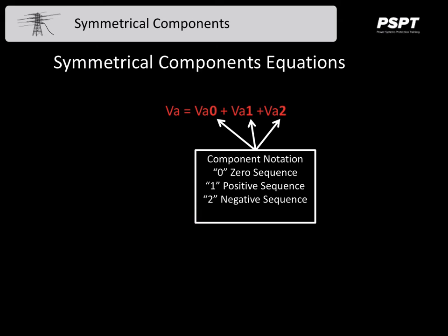And zero will always represent the zero sequence, number one will represent the positive sequence, and number two will represent the negative sequence. So every term is definitive, it should be able to be identified as to what it is and where it is in the scheme of things.